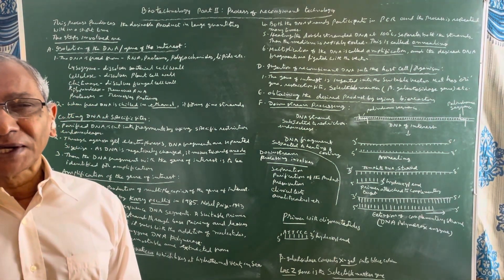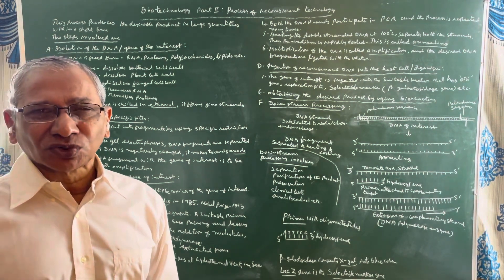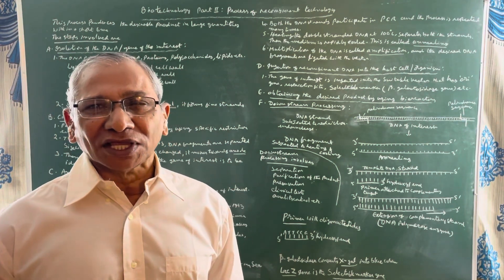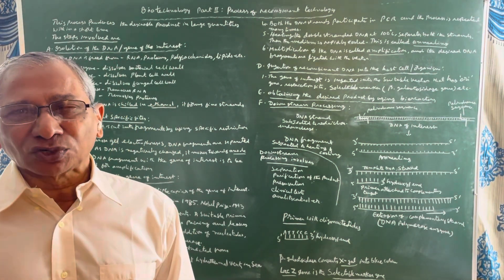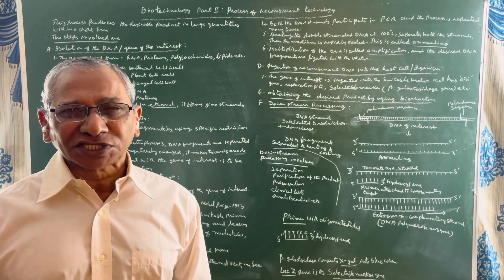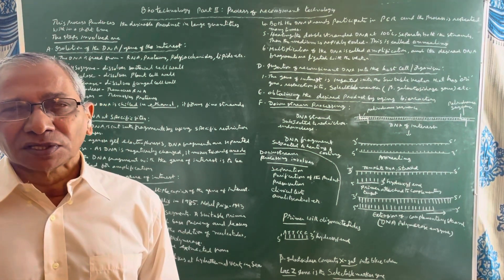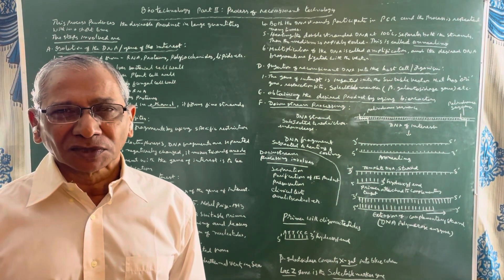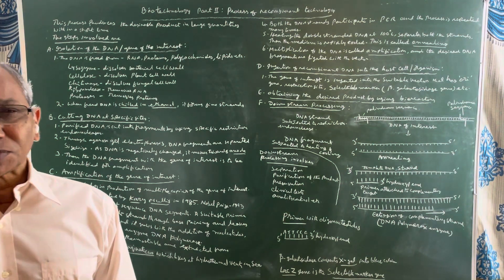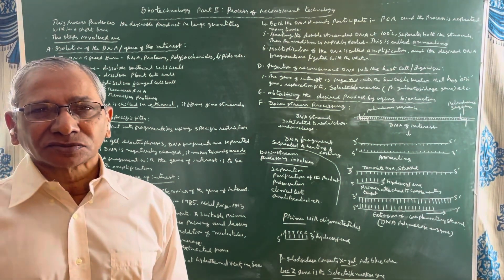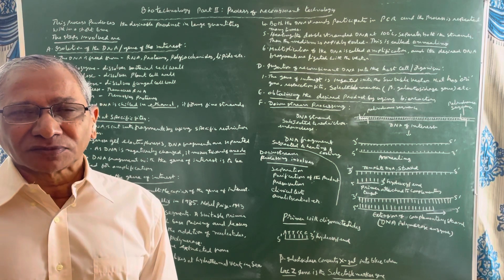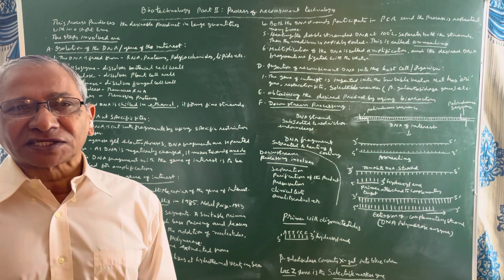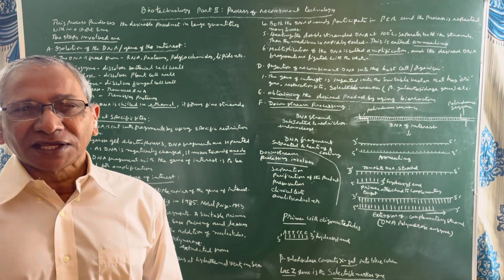Then the DNA molecule is subjected to the action of enzymes known as restriction endonucleases. The restriction endonucleases identify a particular sequence of palindrome nature and make a cut into the palindrome sequence. The restriction endonucleases make two types of cuts. In one type, blunt ends are formed. In another type, the cut is known as the staggered cut and sticky ends are formed in the DNA molecule.